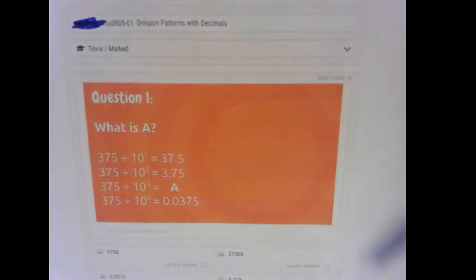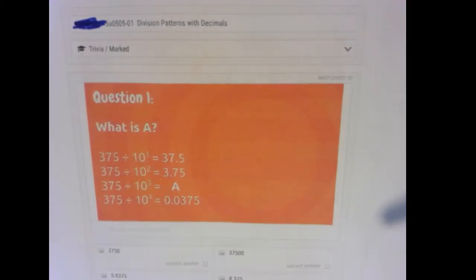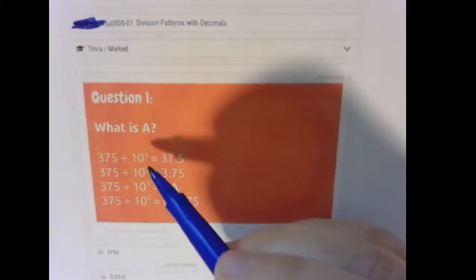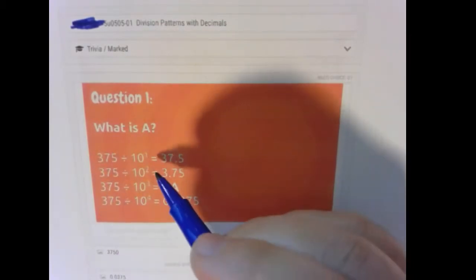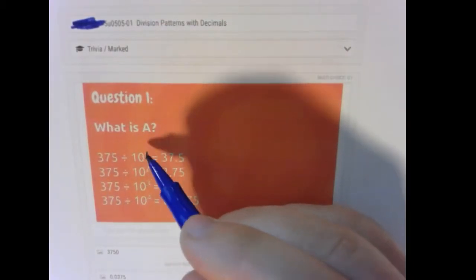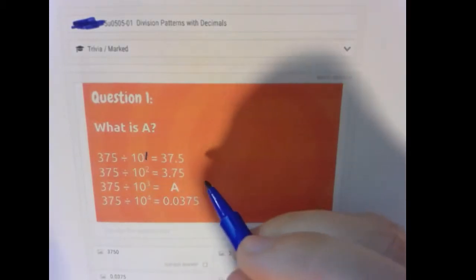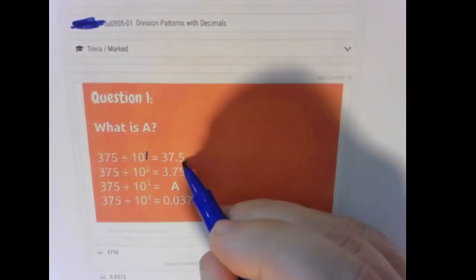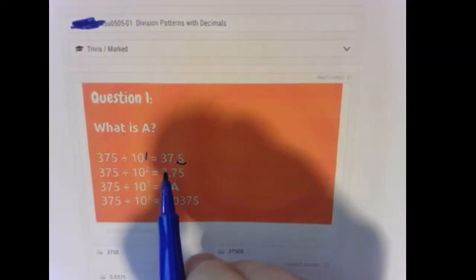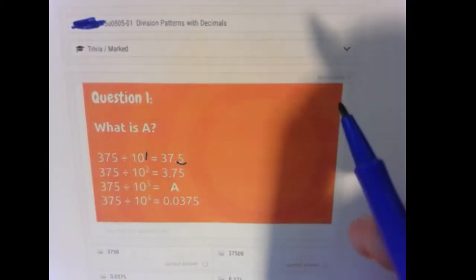So we're trying to figure out what A could be here. We want to look at the pattern that's happening, and look at this. If we do 375 divided by 10 to the first power, or 375 divided by 10, what do we do?